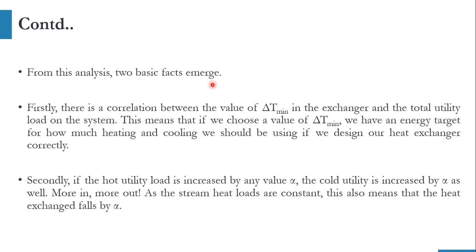From this analysis, two basic facts emerge. First, there is a correlation between the value of delta T minimum and total utility requirements — with an increase in delta T minimum, utility requirements increase. This means that choosing a delta T minimum sets an energy target for heating and cooling if the heat exchanger is designed correctly. Second, if hot utility increases by a value alpha, cold utility also increases by the same value alpha — more in, more out. In an upcoming lecture, we will see the trade-off to find the optimized cost with allowable utility requirements.